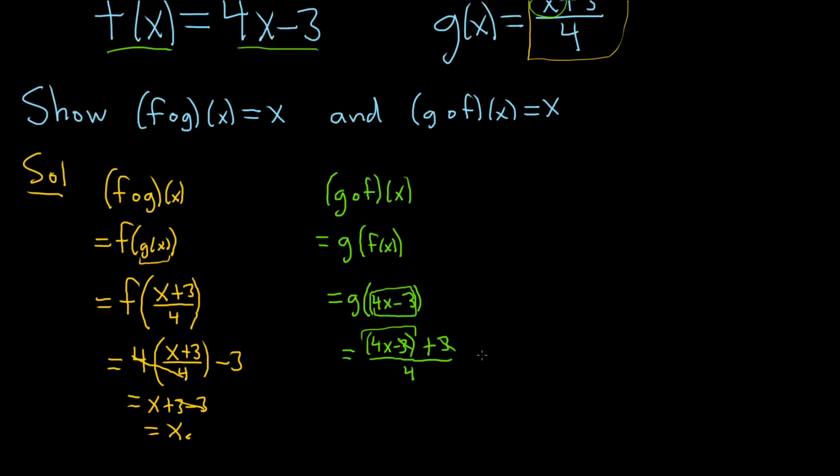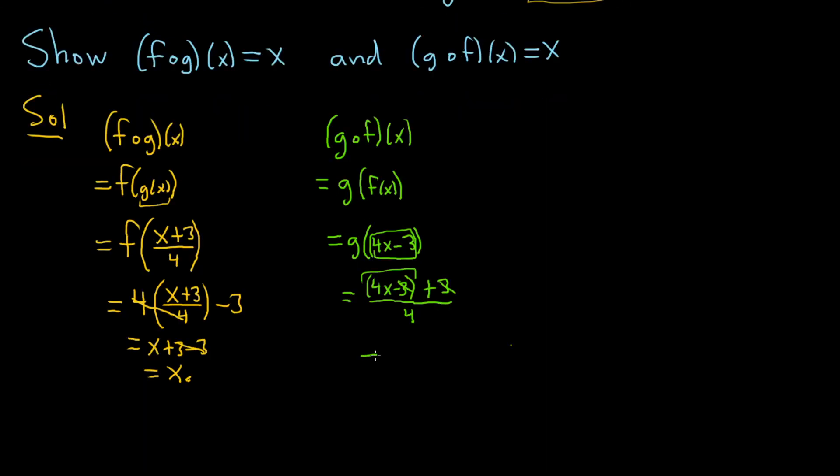The 3s cancel. And so we're left with 4x over 4. The 4s cancel and we get x. And so we've completed the problem. I hope this video has been helpful.